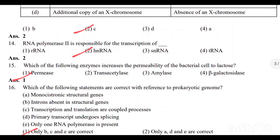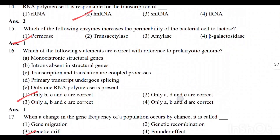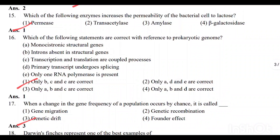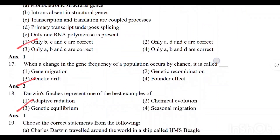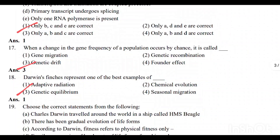Question number 15: Which of the following enzymes increases the permeability of a bacterial cell to lactose? Option 1 — Permease — is the correct answer. Question number 16: Which of the following statements are correct in reference to the prokaryotic genome? Option 1 — B, C, and E — are correct.